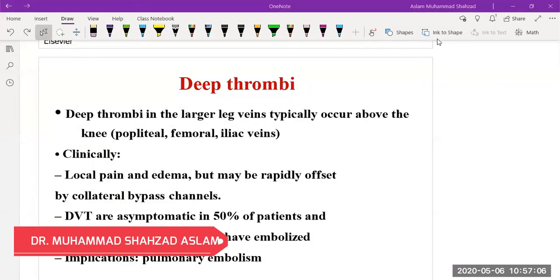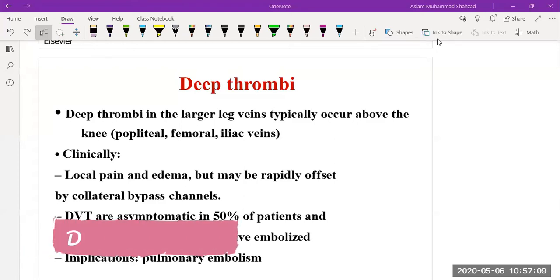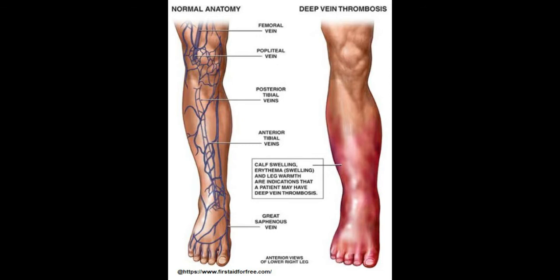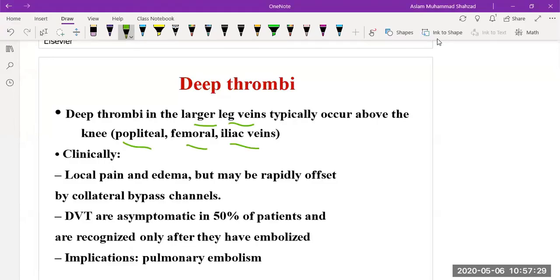Hello and welcome to this lecture. Today we are going to discuss deep vein thrombosis. Deep vein thrombosis usually occurs in large leg veins, above the knee, typically at the popliteal, femoral, or iliac veins. Clinically, local pain is produced along with edema, and it may be rapidly offset by collateral bypass channels. It is asymptomatic in 50% of patients, only recognized after embolization, which then leads to pulmonary embolism.